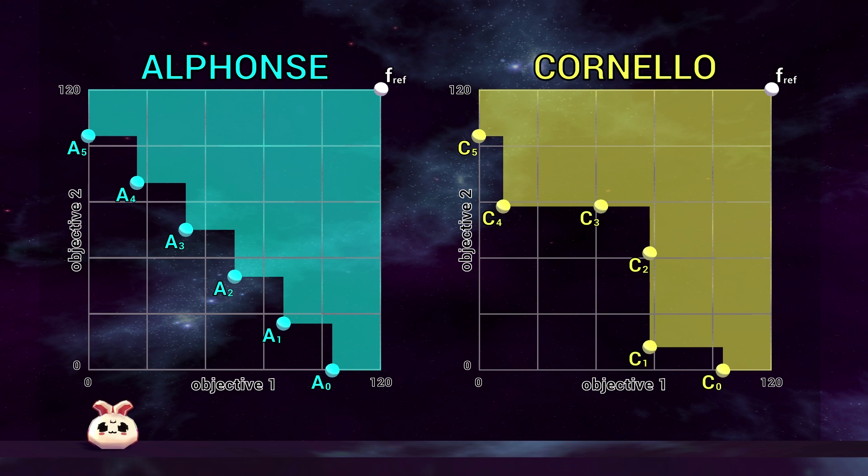The shaded area also indicates the objective space which is dominated by the solution sets. This is all according to a mutual reference point indicated with a white marker in the top right.